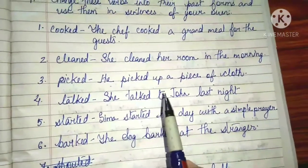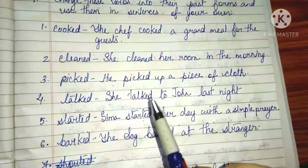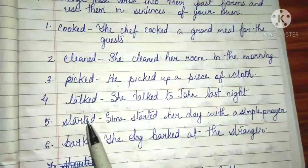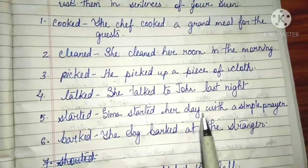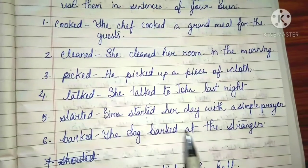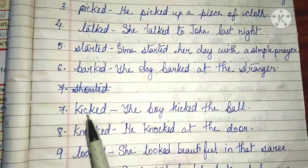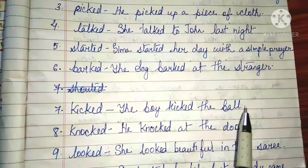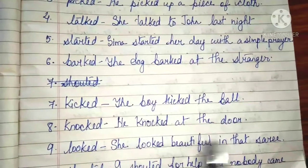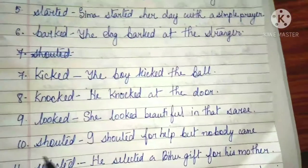Using 'picked': 'He picked up a piece of cloth.' Using 'talked': 'She talked to John last night.' Everything should be in the past because we have made these verbs in the past form. Using 'started': 'Seema started her day with a simple prayer.' Using 'barked': 'The dog barked at the stranger.' Using 'kicked': 'The boy kicked the ball.' Using 'knocked': 'He knocked at the door.' Using 'looked': 'She looked beautiful in that sari.'